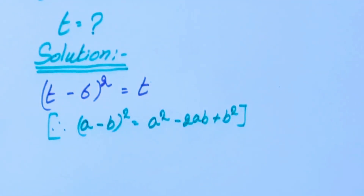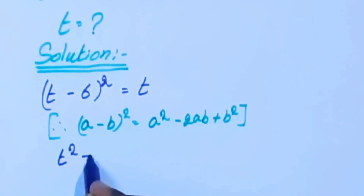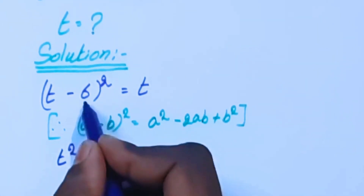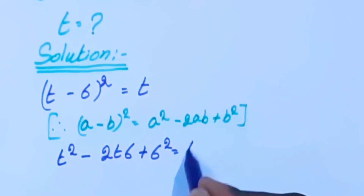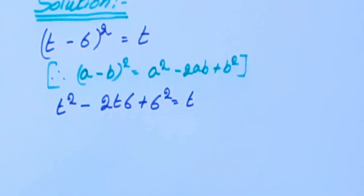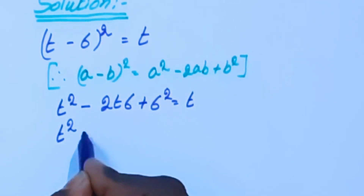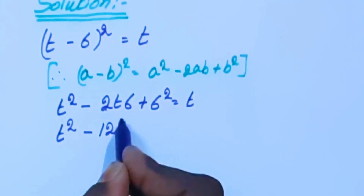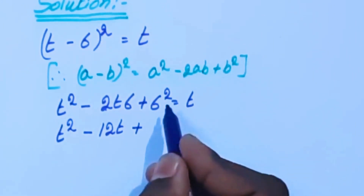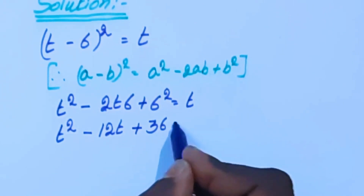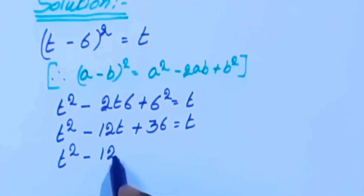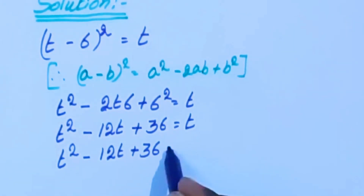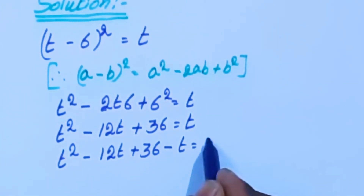Applying the formula here: t squared minus 2t times 6 plus 6 squared equals t, which gives t squared minus 12t plus 36 equals t. Now we are moving this t to the left hand side, so t squared minus 12t plus 36 minus t equals 0.